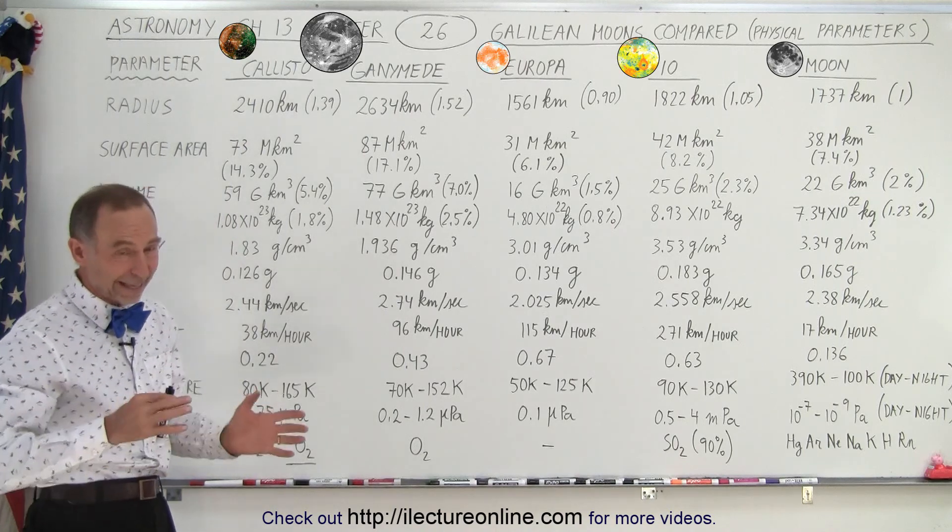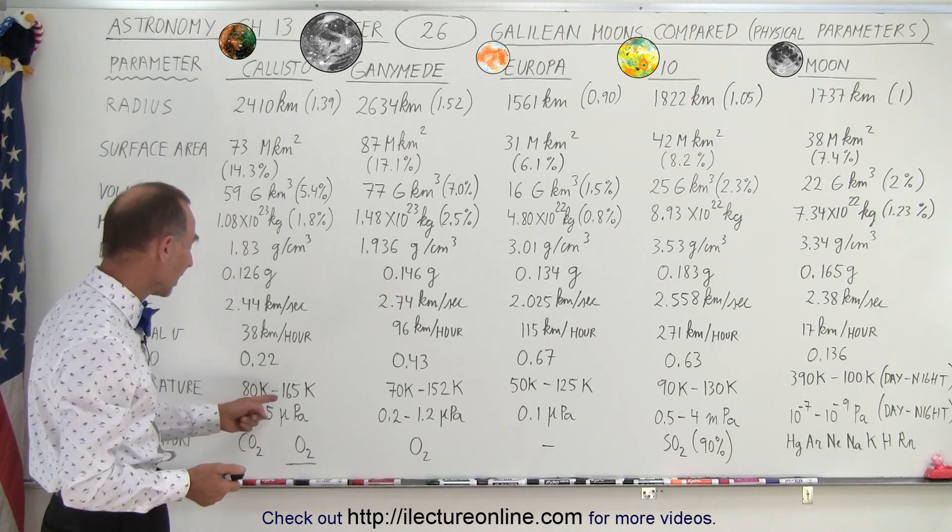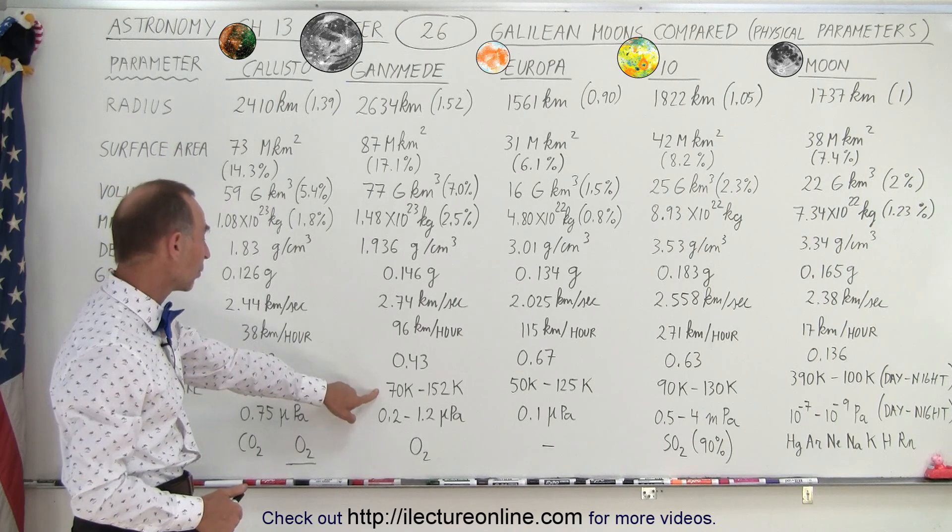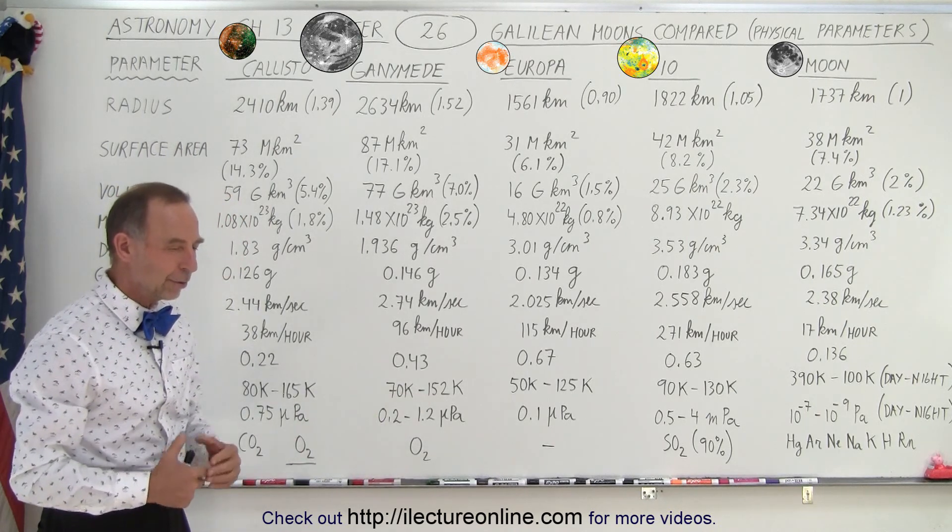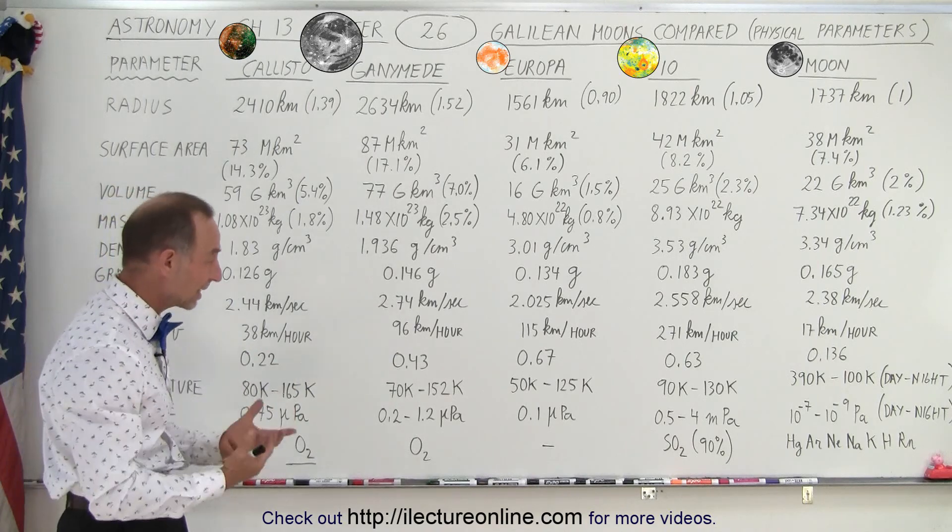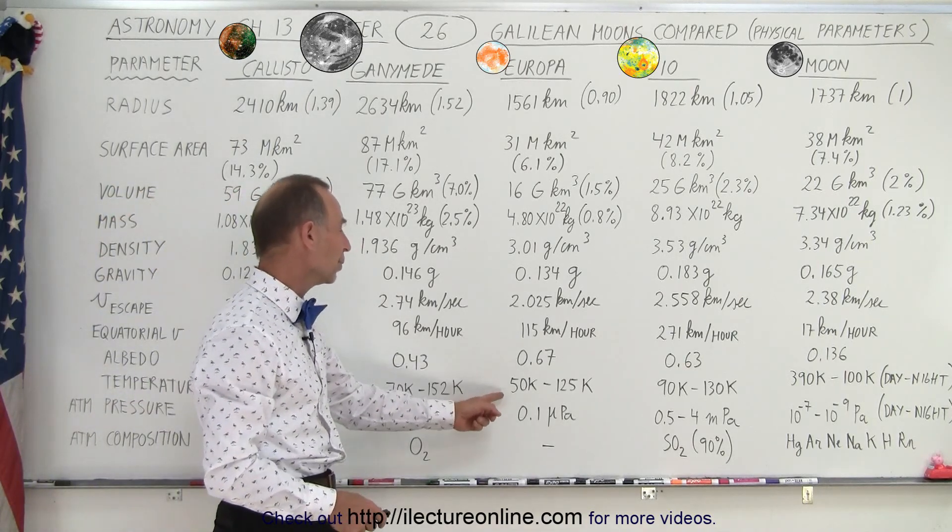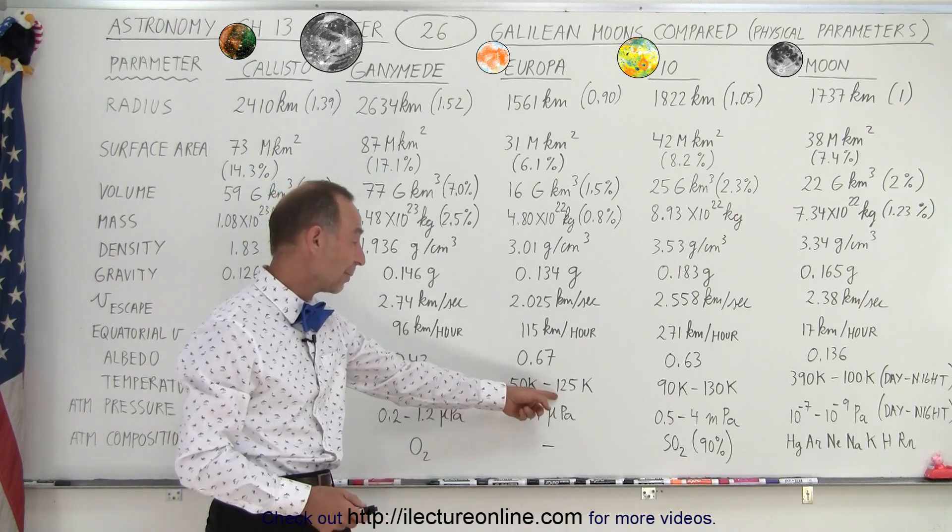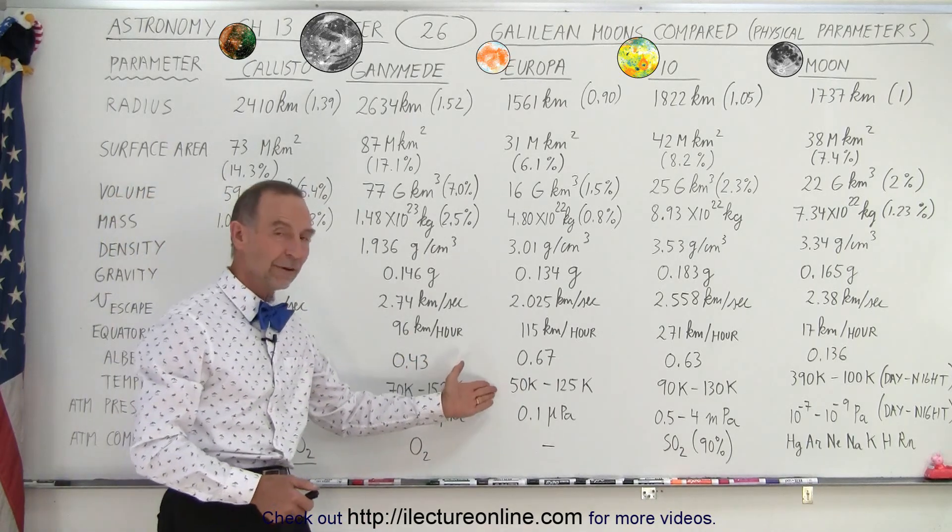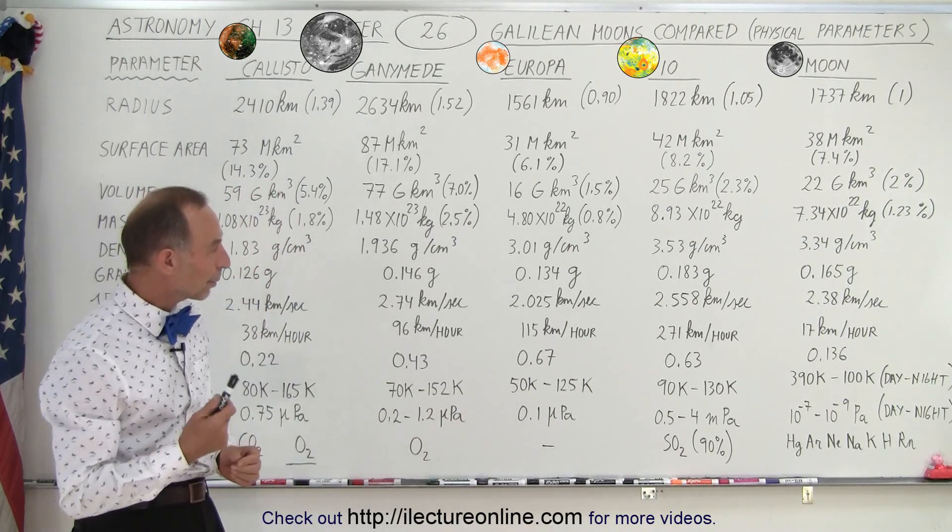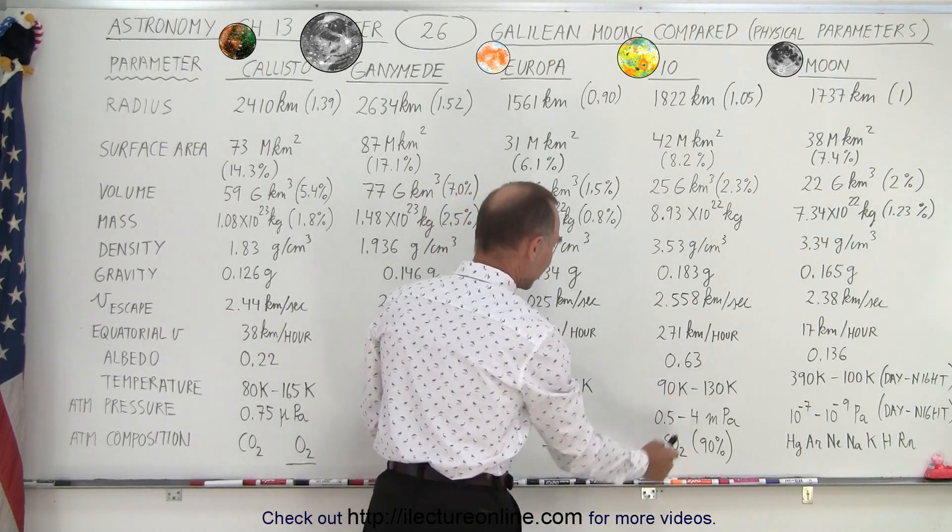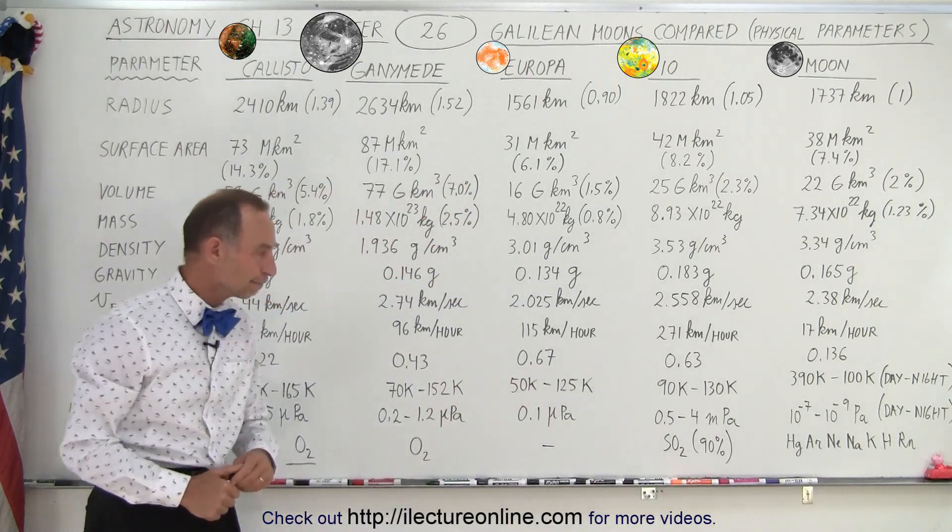Temperature on the surface. Notice, of course, depends on day and night. It varies from 80K during the nighttime to 165K in the daytime for Callisto. Notice that the numbers are relatively the same for Ganymede. A little bit colder at night and a little bit colder at the daytime. Well, the reason for that could be that it's a brighter moon. A brighter moon reflects more light, so it tends not to heat up as much on the surface. Notice Europa is a very bright moon. So notice the nighttime temperature is 50K, daytime temperature 125K, which is significantly cooler than both Callisto and Ganymede. But that is because it's a very reflective moon, so we expect the temperatures to be a little lower.